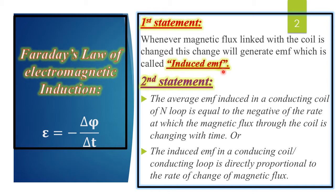Students, this statement we have used multiple times. When Michael Faraday observed all his activities and experiments, he concluded this statement. According to this statement, the average EMF induced in a conducting coil of N loops is equal to the negative of the rate at which the magnetic flux through the coil is changing with time.